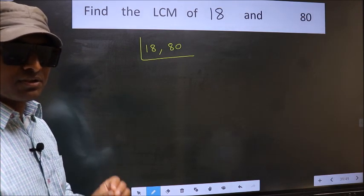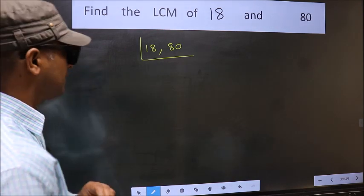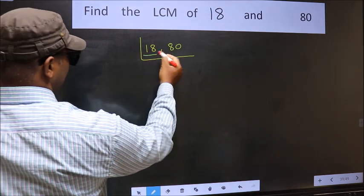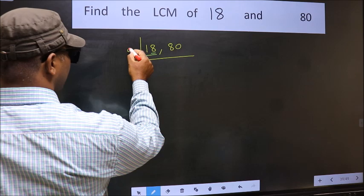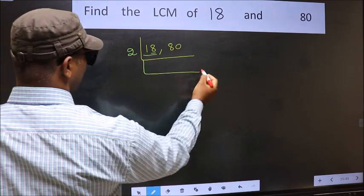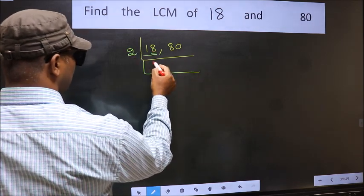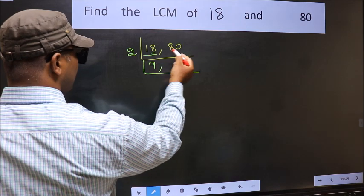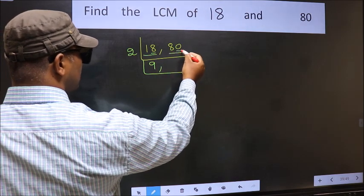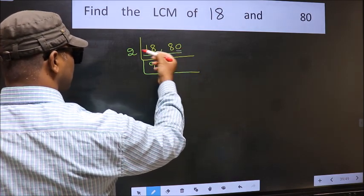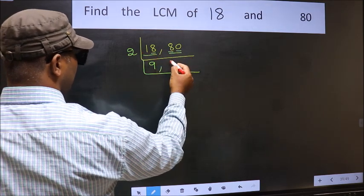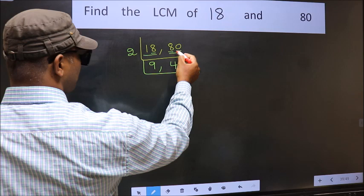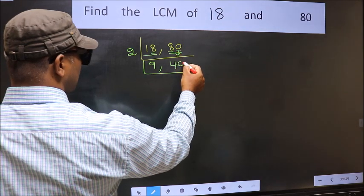Now you should focus on the first number which is 18 here. For this number last digit 8 is even so take 2. When do we get 18 in 2 table? 2 nines 18. The other number 80 last digit 0 so this is divisible by 2. First number 8. When do we get 8 in 2 table? 2 fours 8. Now this 0 as it is down.